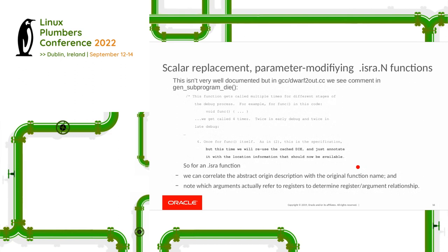If we look a little bit closer, we actually have a later DW_TAG_subprogram which references the original one and has the correct information. When generating debug info there are a number of passes, and one of those passes happens after the optimizations have occurred, so we can actually grab some of that information. For one of these '.isra' functions, we can correlate that abstract description with the original and note where arguments actually refer to registers, and also look at constants and values passed via the stack.